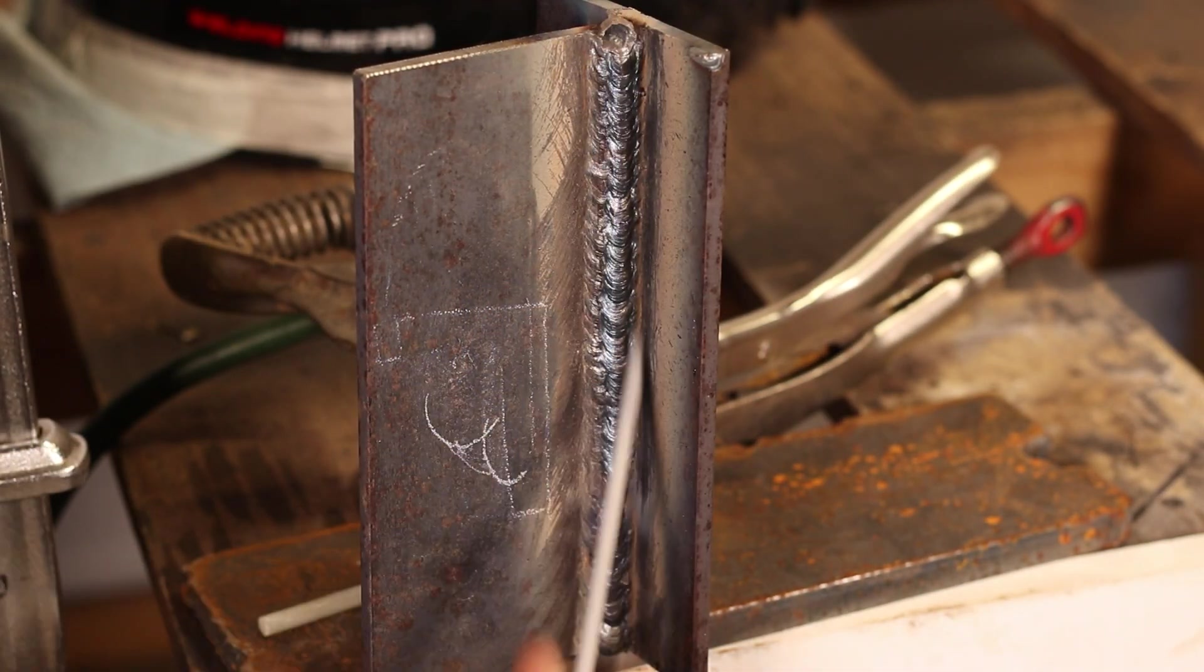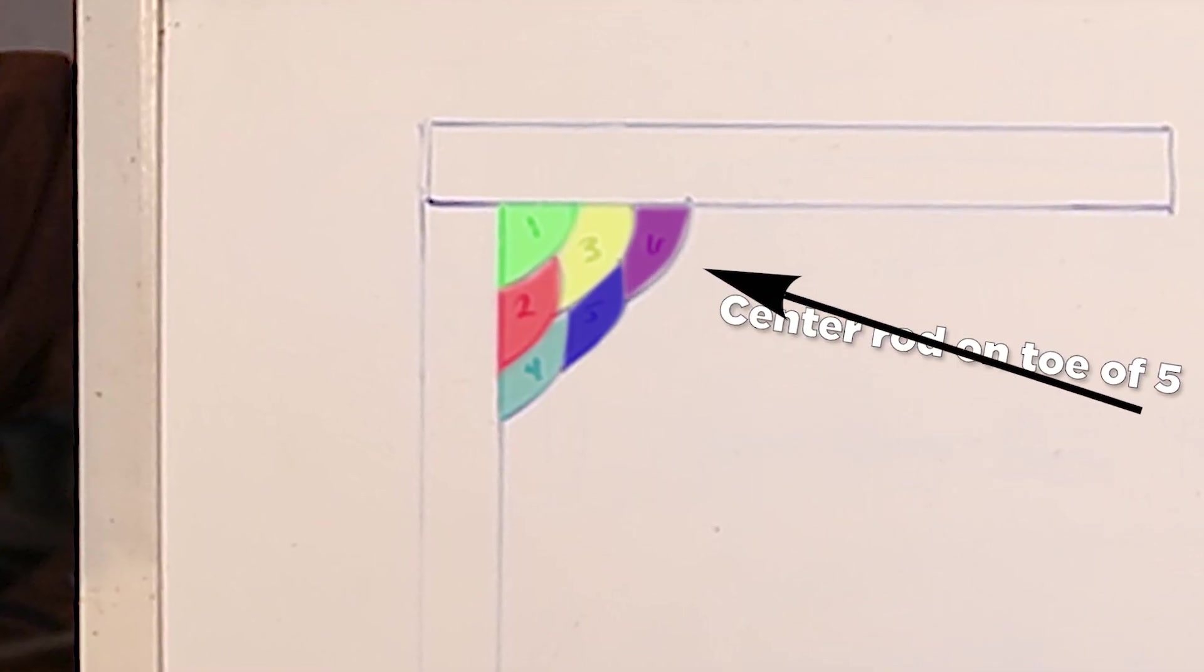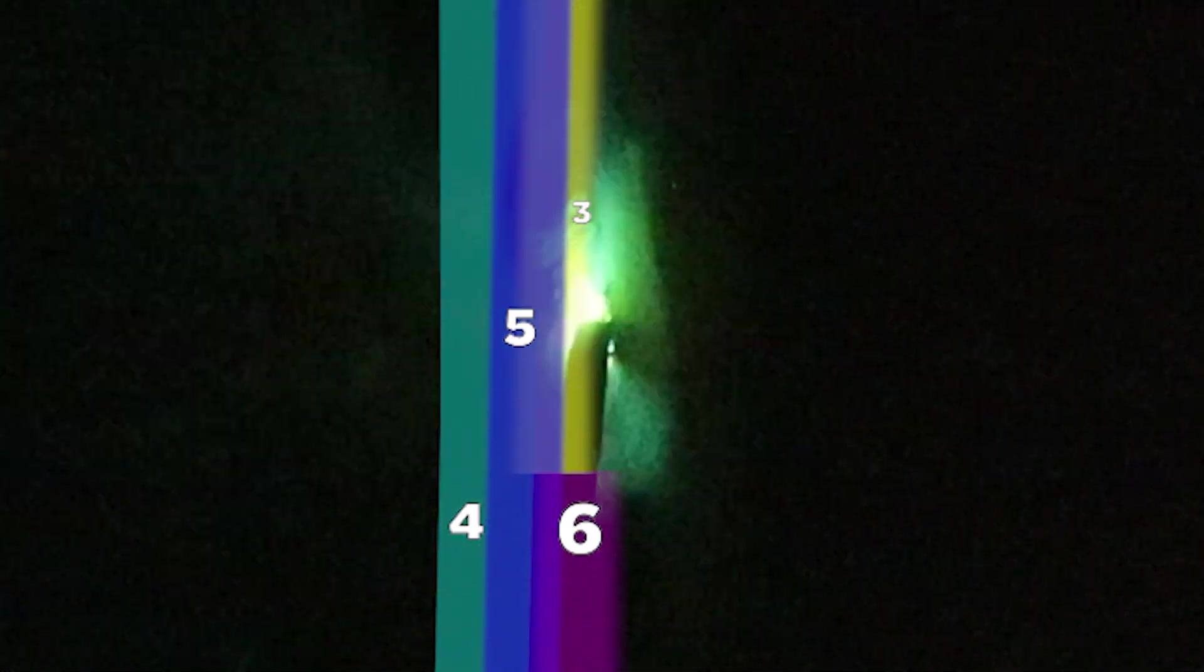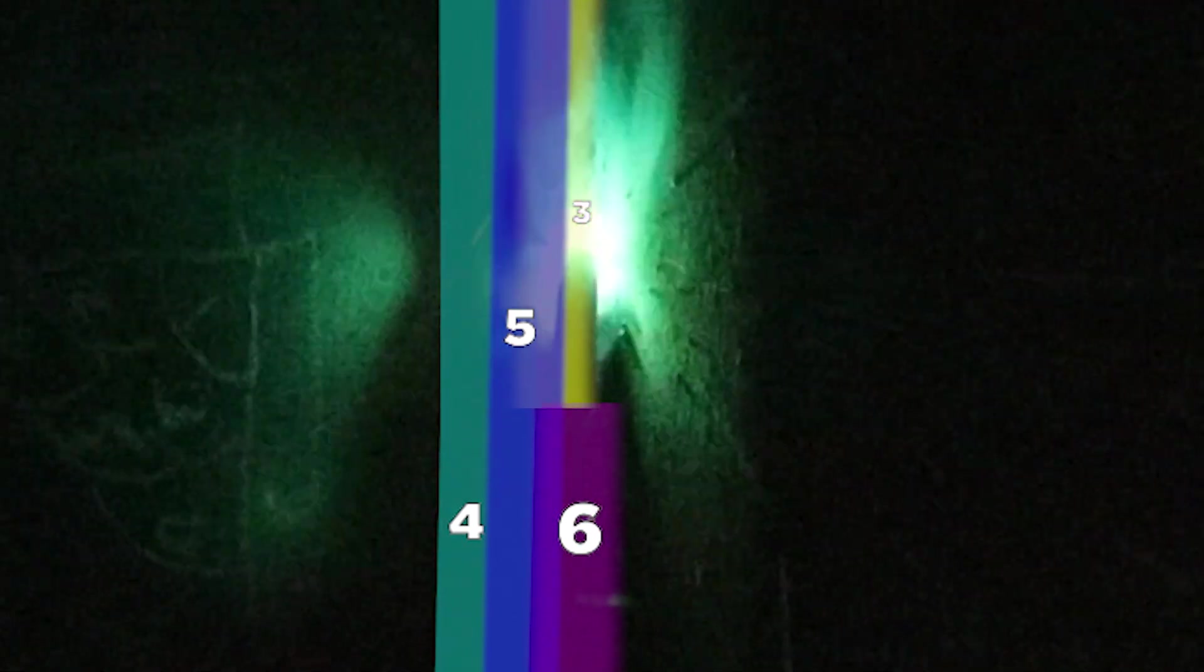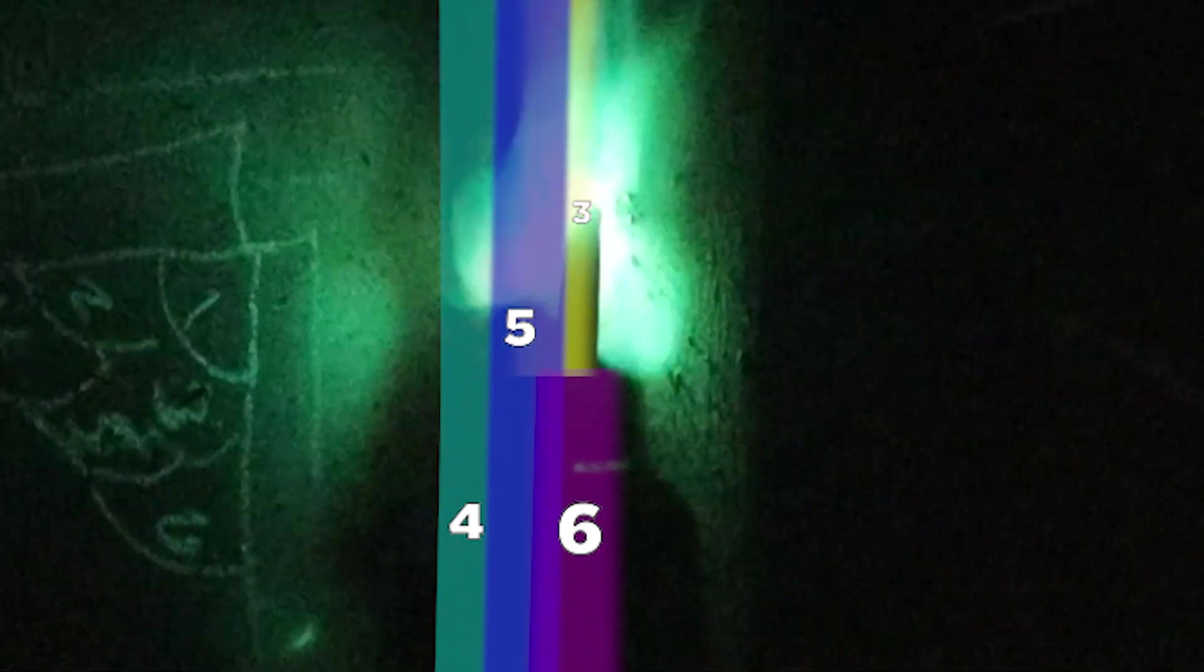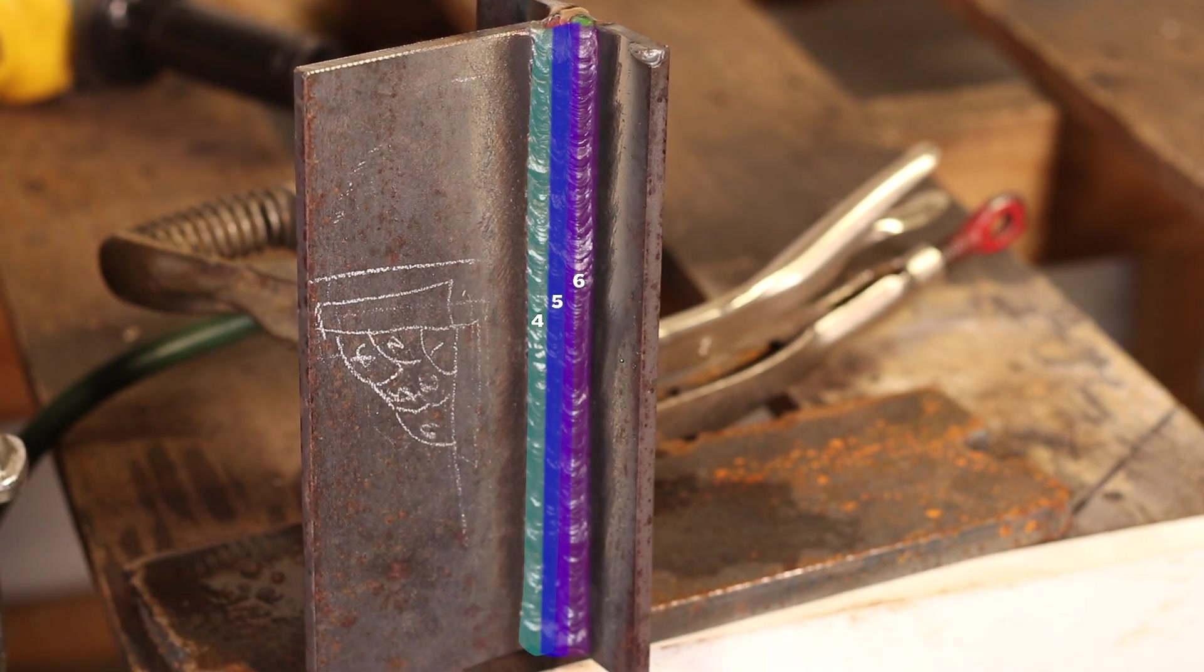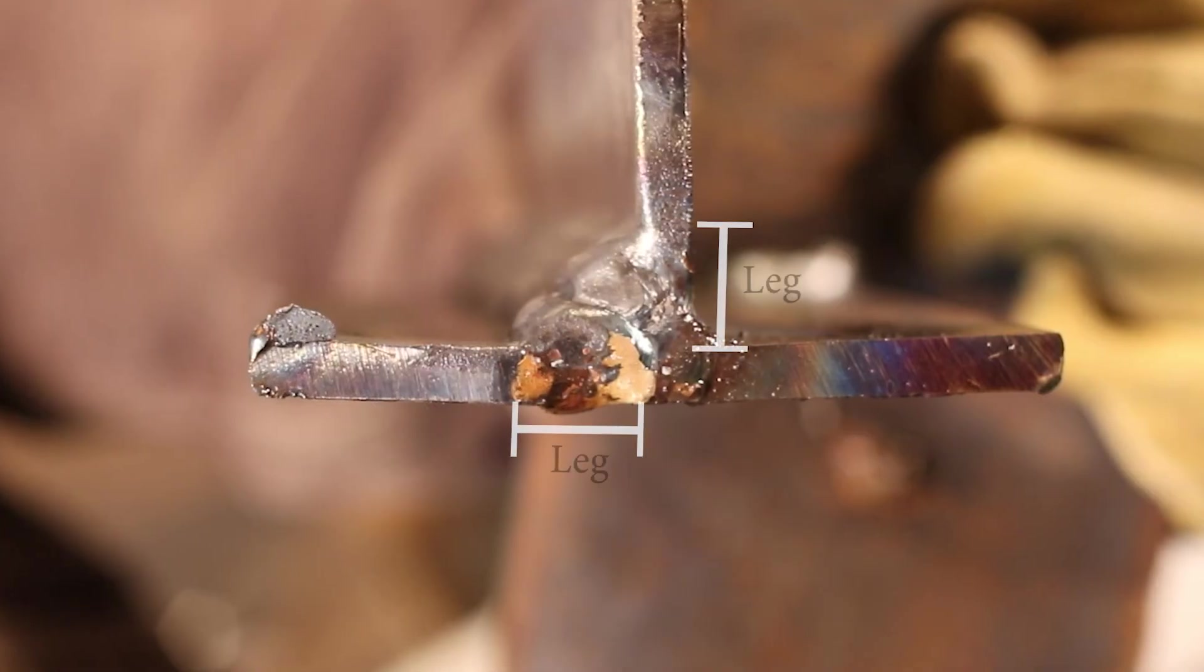And it's just keeping everything nice and even through here. Bead number six, basically we're covering up three completely. We're tying into five, and then we're tying into the base plate on this side. All right, so this is the finished product. Got six beads in here. We kept the legs even. So if you look down the plate, we've got an even amount of weld on this side, an even amount of weld on that side. And we did that consistently through the whole thing. We've got an even amount of weld here compared to here.